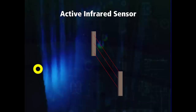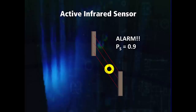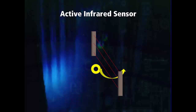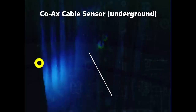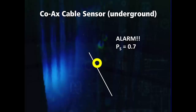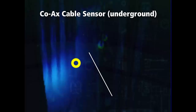We will now go through an example that considers a simple situation where we have an active infrared sensor and a buried coaxial cable on the perimeter of our facility. We will say that the infrared sensor has a 90% probability of detecting someone walking through it. However, due to the positions of the beams, it is susceptible to someone bypassing it by crawling under it. The second sensor is the buried coaxial cable, which will alarm with a probability of 70% when someone passes over it on the ground. However, if the intruder is aware of the cable, they may be able to jump over it or use something to bypass it.